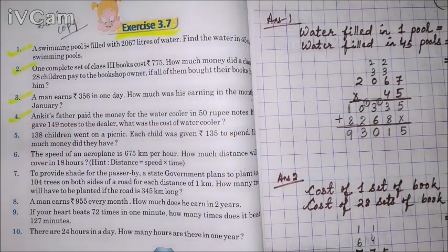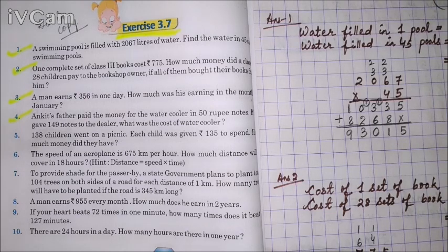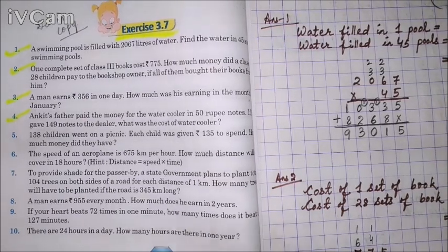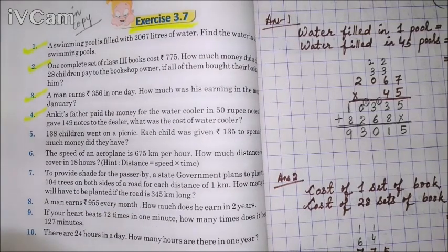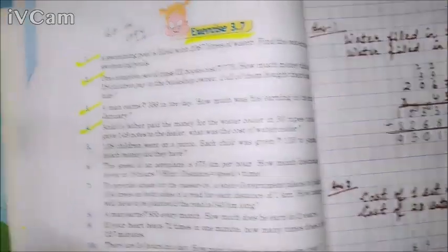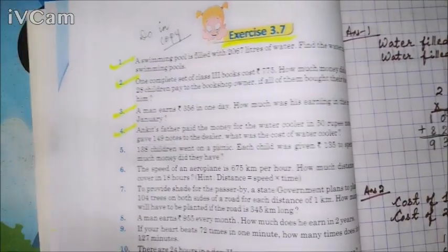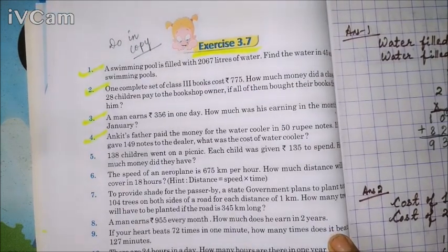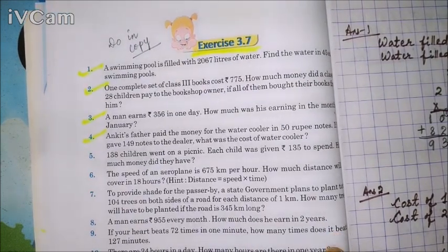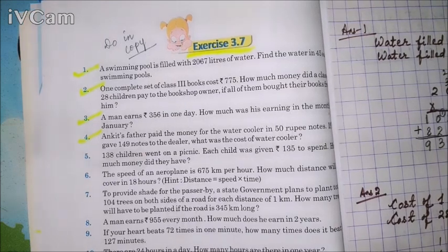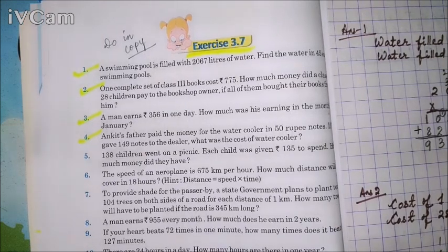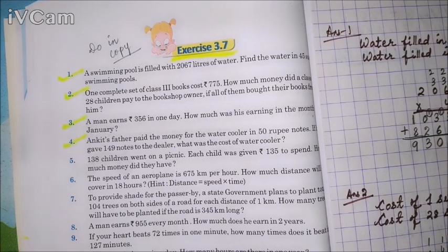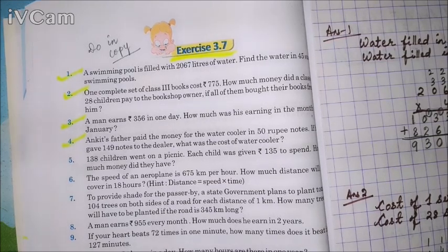In section 3.7 you have word problems based on multiplication. Children, remember: you multiply when you have the value of one and the value of more is asked. Now read the question with me — in 3.7, question numbers one to four are in your syllabus.